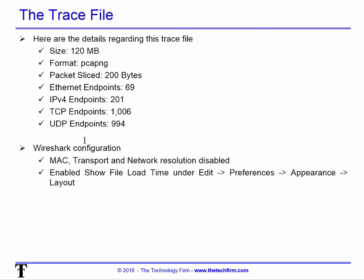On the Wireshark configuration side, I want it to load as quickly as possible. There's a lot of rumor and legend about how to speed up Wireshark loading a trace file, but one setting I want to cover is disabling MAC, transport, and network resolution. This way MAC addresses don't get resolved to HP, IBM, Cisco, etc.; port 80 doesn't get resolved to HTTP; and 8.8.8.8 doesn't get resolved as Google Public DNS.